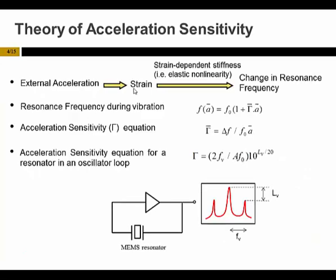Now we want to know how external acceleration can affect the resonance frequency of a resonator. The external acceleration generates an extra strain for the resonator, and if the material of the resonator is nonlinear — meaning the stiffness is strain-dependent — the resonance frequency will shift. This resonance frequency shift can be described by an equation that depends on the amount of acceleration applied and also the acceleration sensitivity of the resonator.